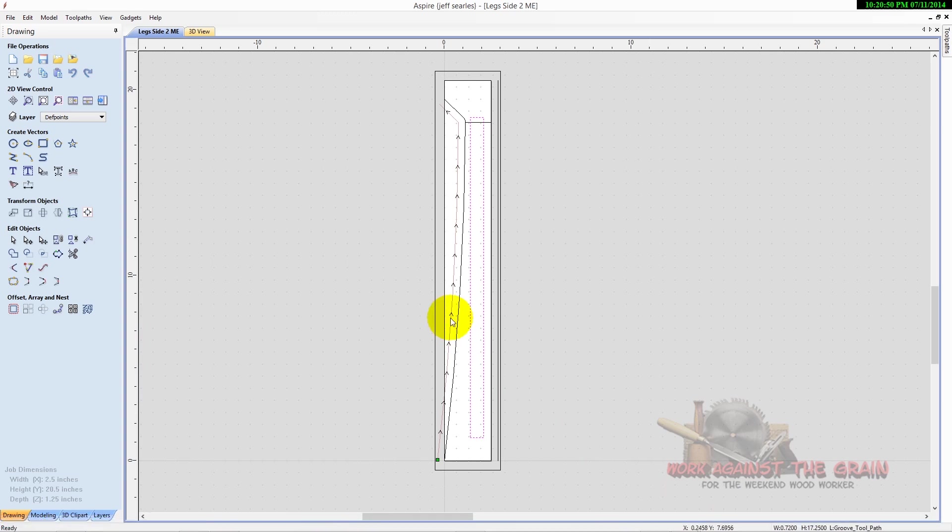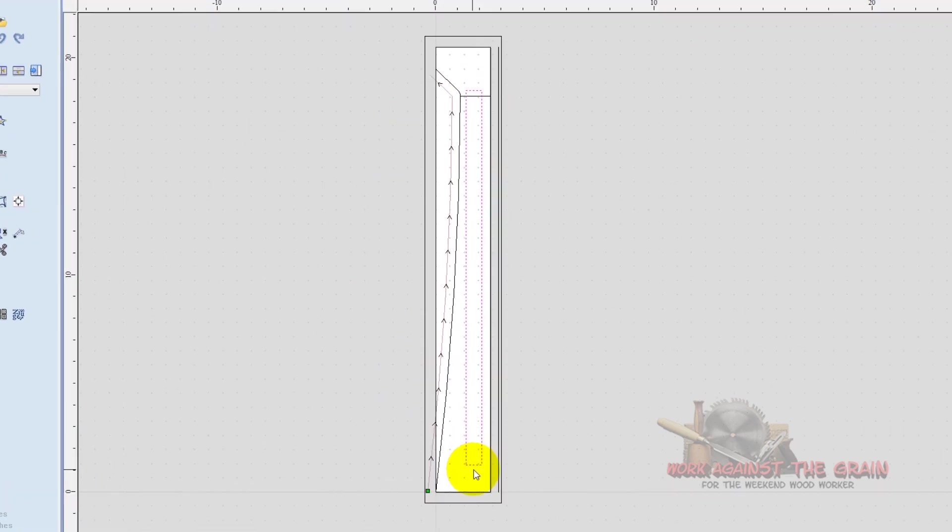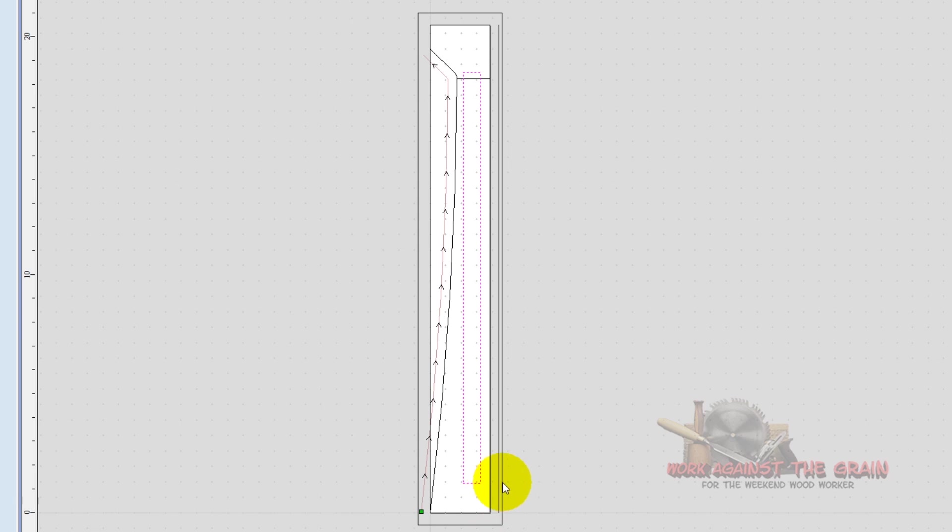Let me go ahead and pull up and show you what I'm talking about. So here I have what's going to be a leg to a blanket chest. The material in white here is 2.5 inches on my X, 20.5 on my Y, and it's 2.5 inches thick.